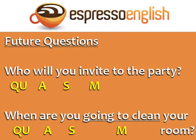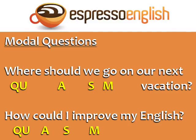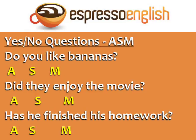For questions in the future, we can use 'will' or 'going to': 'Who will you invite to the party?' and 'When are you going to clean your room?' In the case of modal questions, the auxiliary verb is 'should', 'could', or 'would': 'Where should we go on our next vacation?' and 'How could I improve my English?'